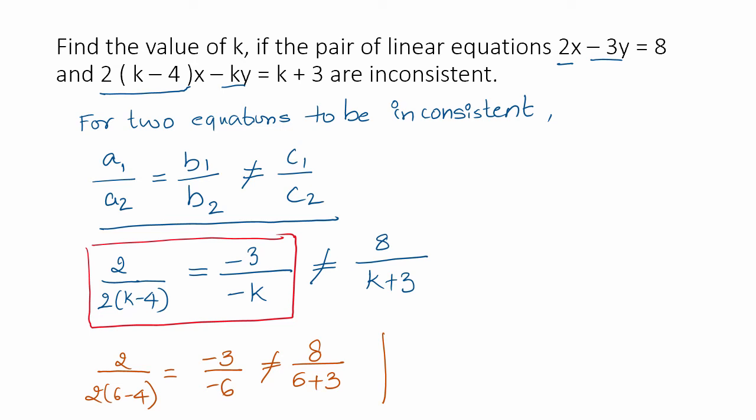2 divided by 2, 6 minus 4 is 1 by 2. Minus 3 times 2 is minus 6 which means that is also 1 by 2 not equal to 8 divided by 11. Hence the two equations are inconsistent when the value of k is 6.